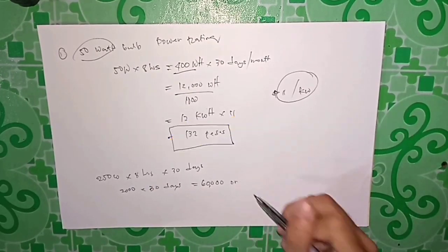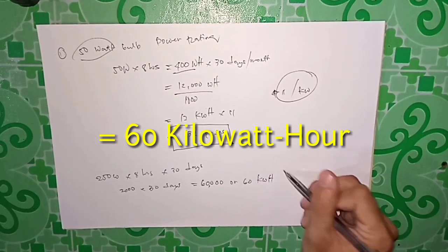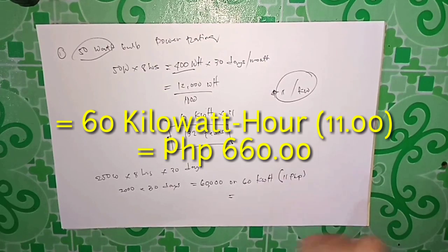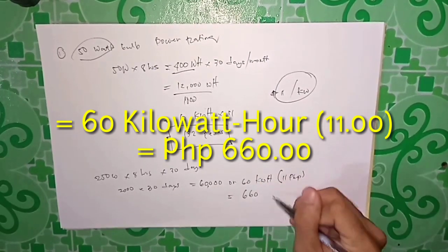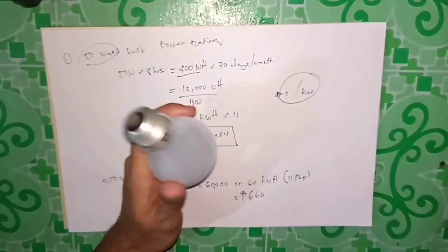Or 60 kilowatt-hour times 11 pesos equals 660 pesos. That's just for five bulbs, guys.